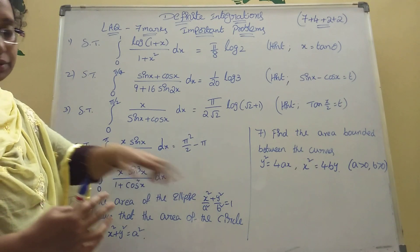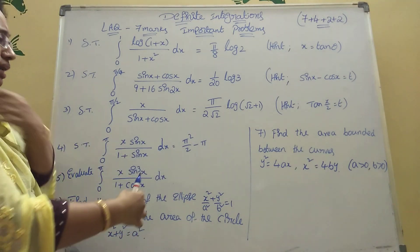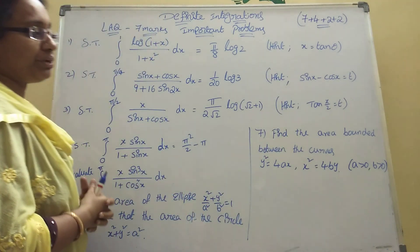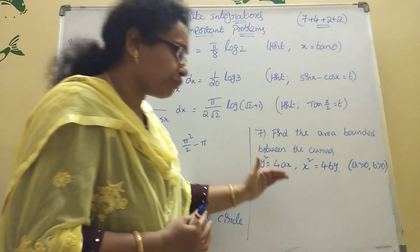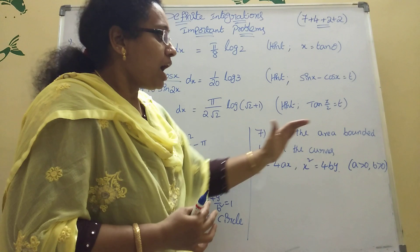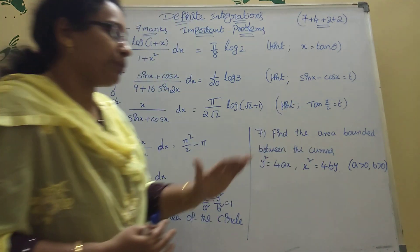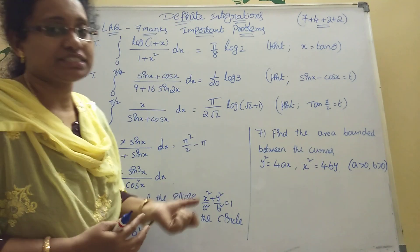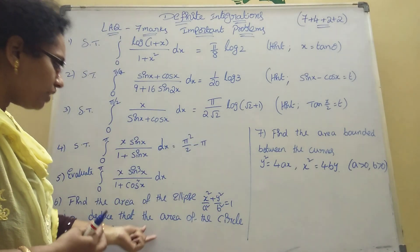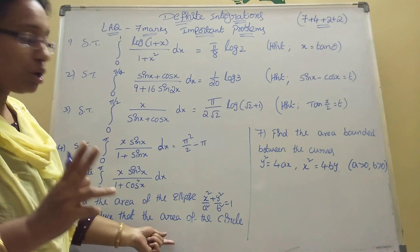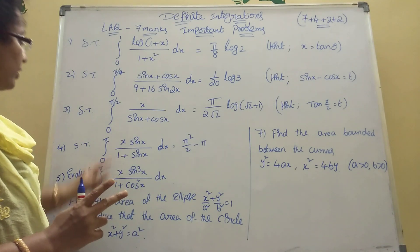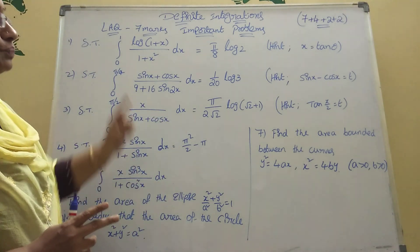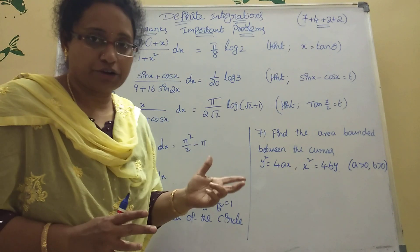The seventh and last problem: find the area bounded between the curves y² = 4ax and x² = 4by. That is the seventh-mark problem. So in total, two area sums and five integration sums — these are very important seven-mark problems for AP and Telangana board exams.